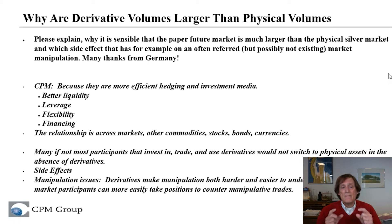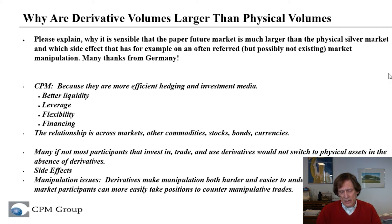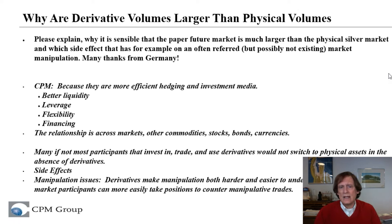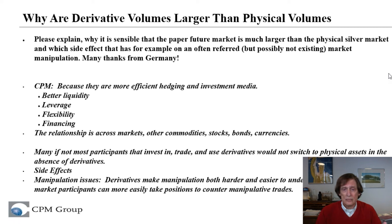This relationship of larger derivatives markets than physical markets is true across markets — in all other commodities, in stocks, bonds, and currency. When you look at gold and silver and see these very large ratios of derivatives traded relative to underlying physical supply and demand — maybe 10 times as much or more — you find those kinds of paper-to-physical ratios in currency and treasury bills, because gold and silver are traded much more as financial assets than as physical or industrial commodities.